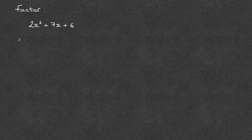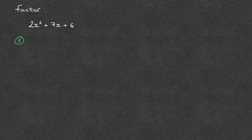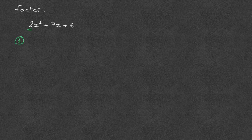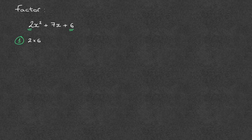Let's get started. The first step is to multiply any number multiplying the x squared, so in this case that's 2, by the constant term, so that's the term without an x. And in this case that's 6. So we have 2 times 6 which equals 12. And that's step 1 done.